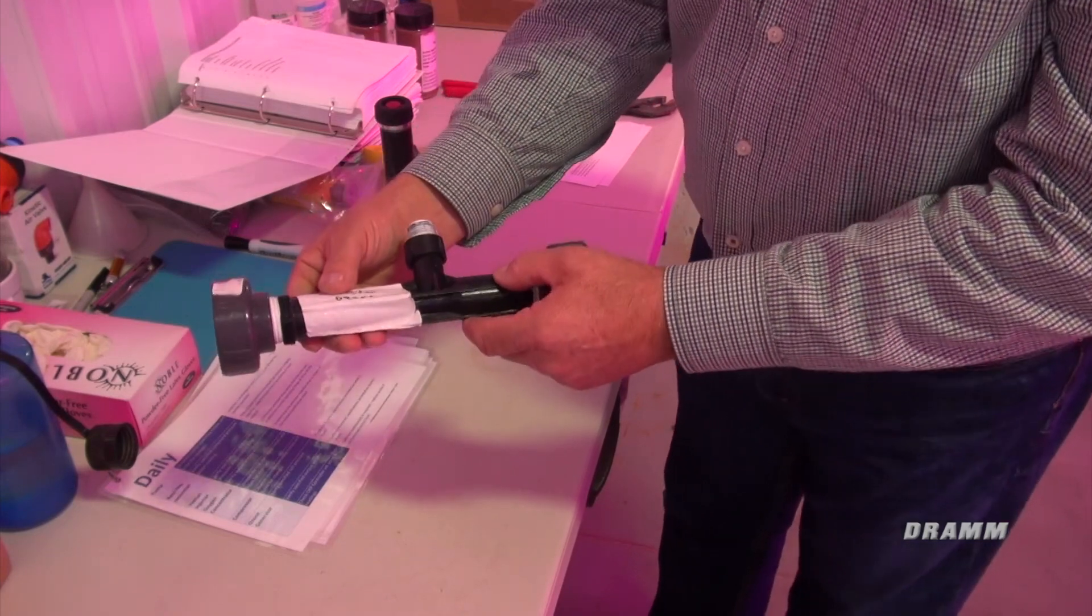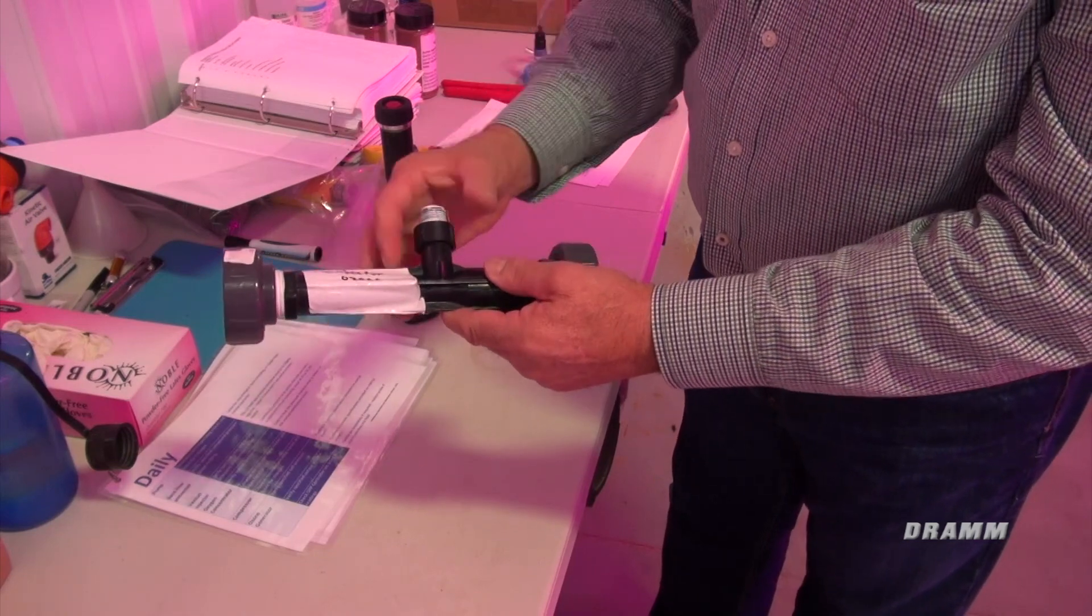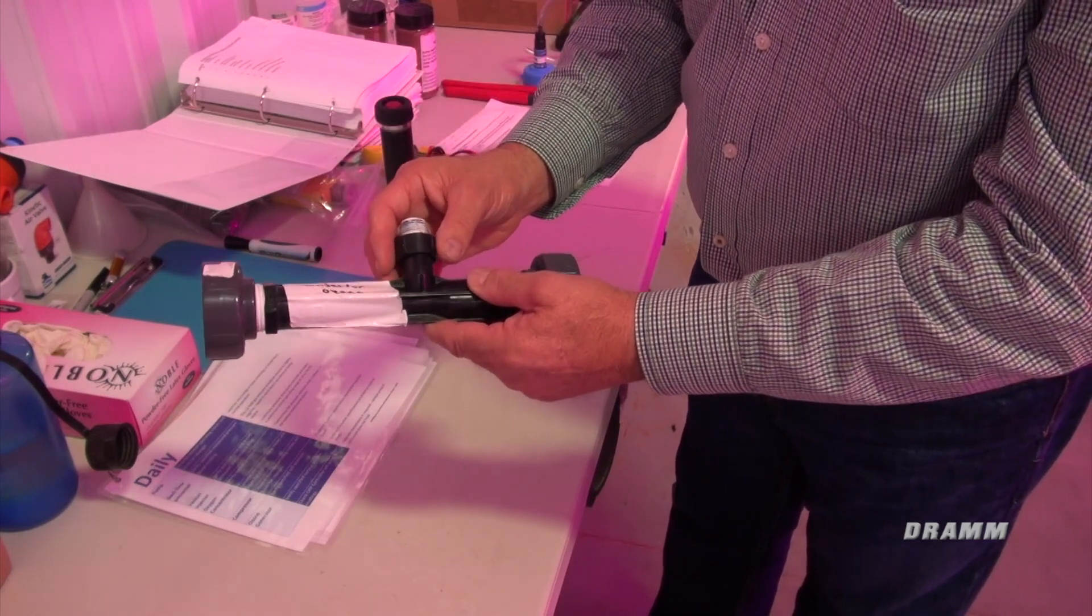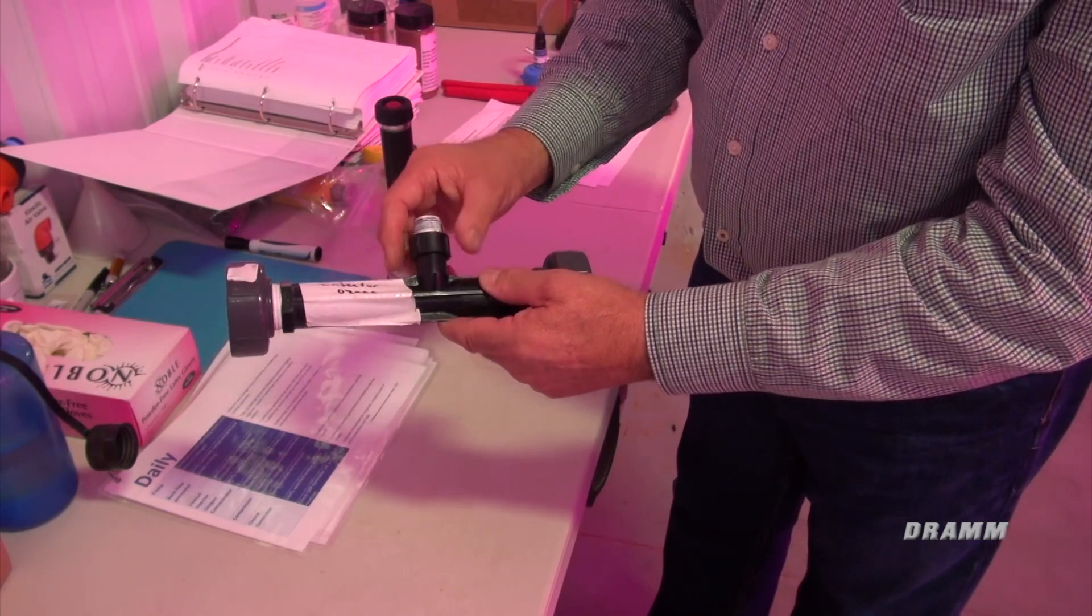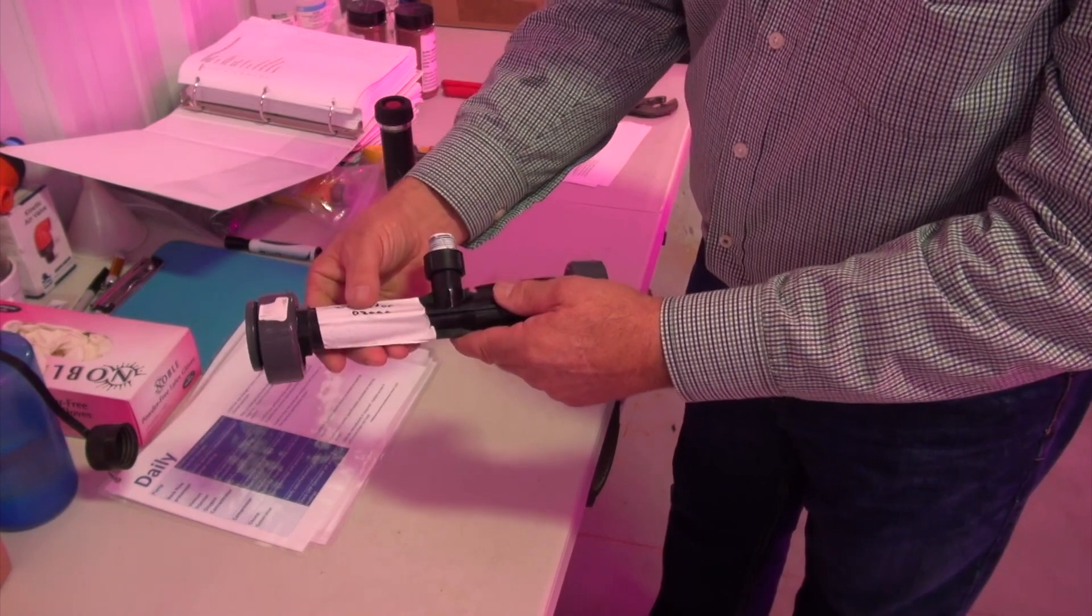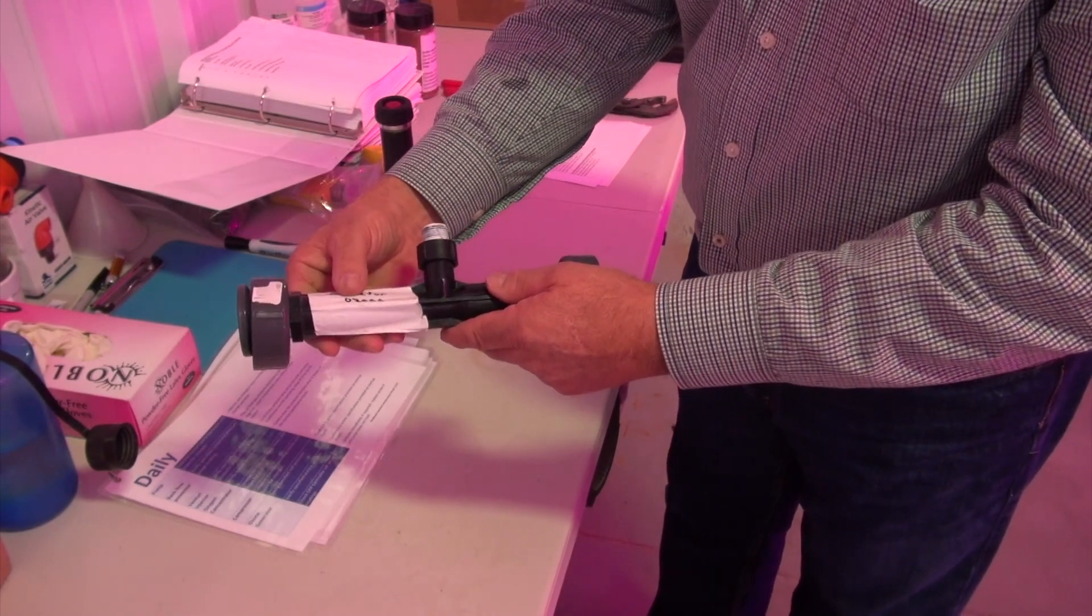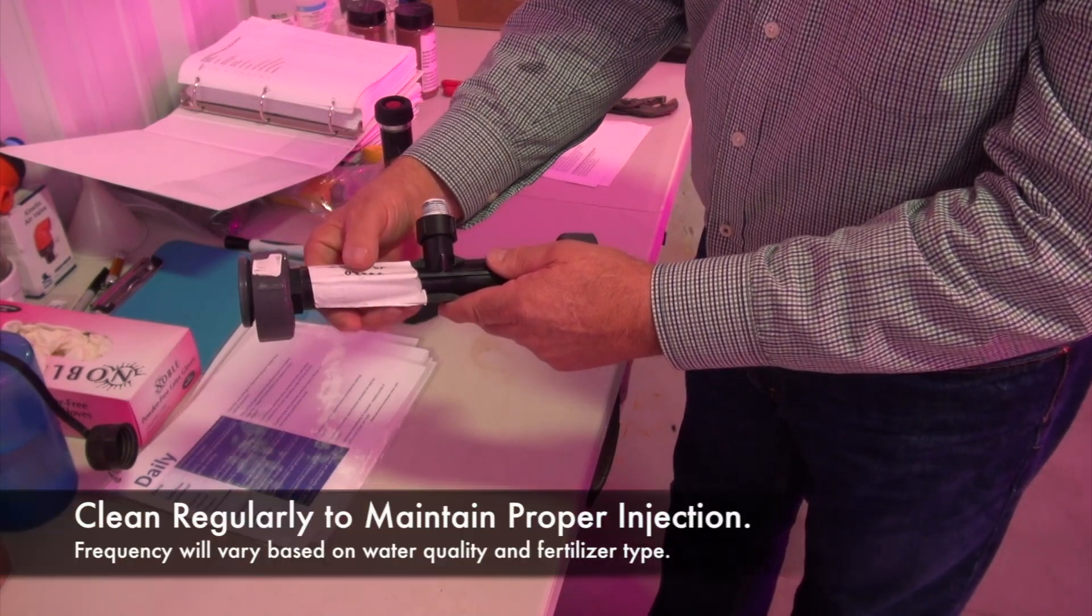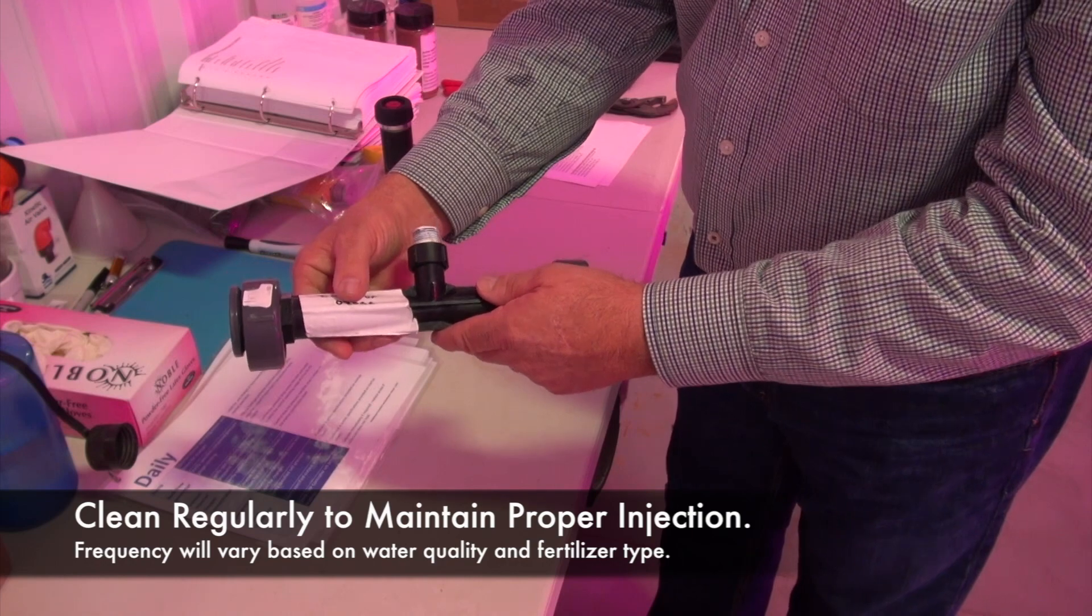So it's very important that this is kept clean at all times. When it gets dirty, you'll notice your ORP dropping. You also may notice that the water clarity goes down. So we need to keep this clean. Sometimes you need to clean it once a week. If you've got really dirty water or you're growing with organic fertilizers, sometimes you can go by for a year without cleaning it. So it really depends on water quality.